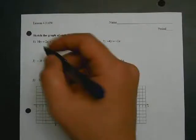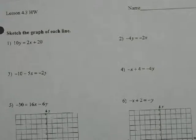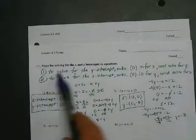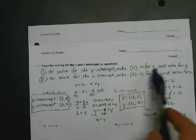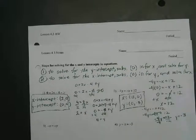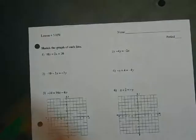So I have 10y equals 2x plus 2 — I'm just going to start with the first one. Now most of you were here during the lecture; I know some people left or weren't here, so this is what you were missing as far as the notes. Basically we're graphing by solving for the x and y intercepts. To solve for the y intercept, substitute 0 in for x and solve for y. To solve for the x intercept, substitute 0 in for y and solve for x.